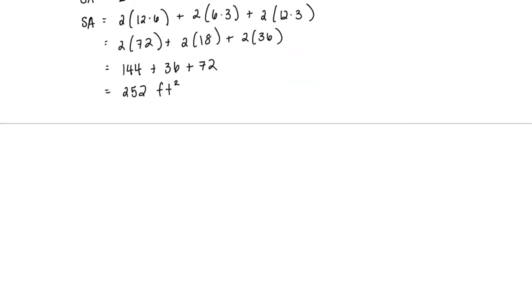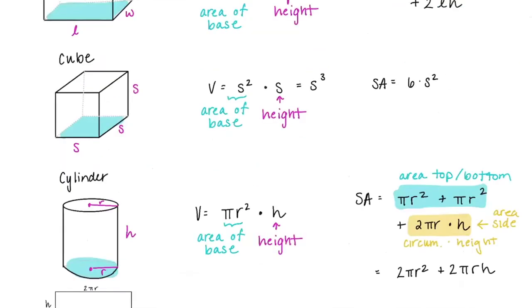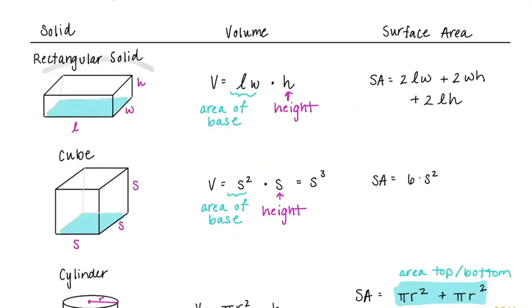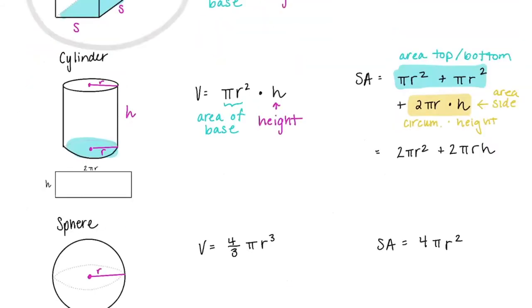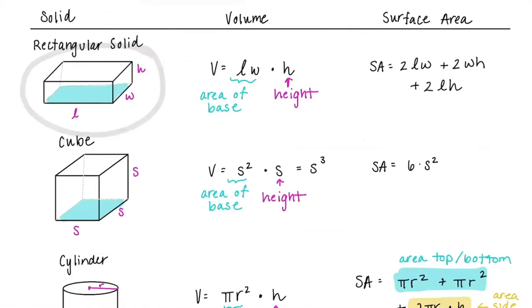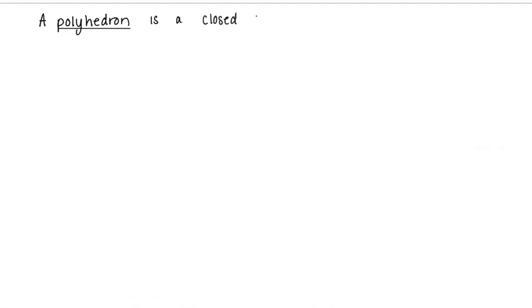Something really cool: all of these shapes with sharp edges are a special type of solid called polyhedra — a single one is called a polyhedron. Just like we learned about polygons in 2D, the 3D extension is a polyhedron. A polyhedron is a closed surface formed by the union of polygonal regions.